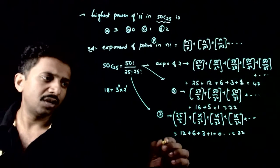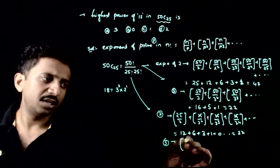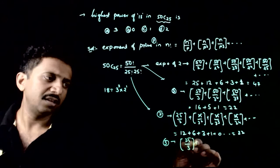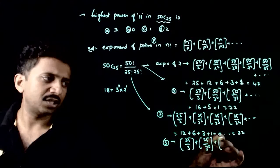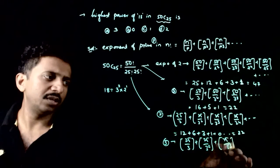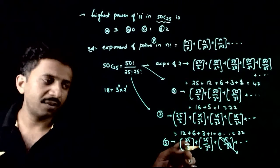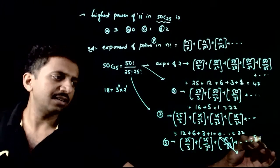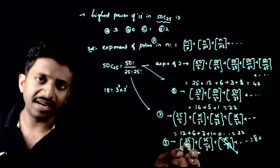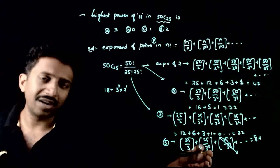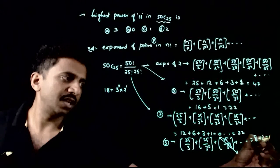And the exponent of 3 in 25!: floor(25/3) + floor(25/9) + floor(25/27) + ... = 8 + 2 + 0 + ... = 10. So in 25! you have 3^10.